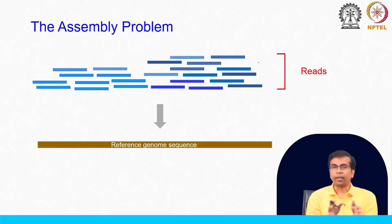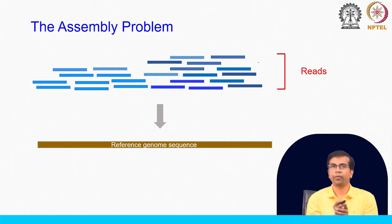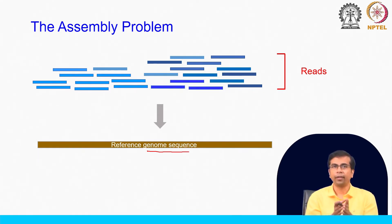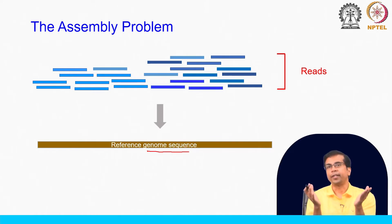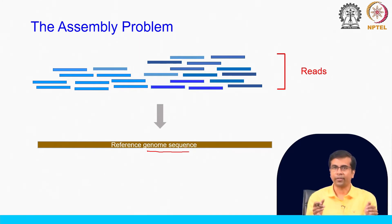The assembly problem can be summarized simply: what you get from the sequencer are reads, shown in different shades of blue. What you want to do from these reads is build a single continuous sequence — that is the goal. This is what we call the reference genome sequence, such as the human or mouse reference genome. We isolate cells, have DNA fragments, sequence them using a sequencing platform, get these reads, and the ultimate goal is to get the full sequence in one continuous stretch.